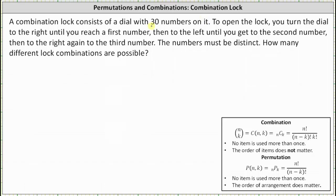In this case, because there are 30 numbers and it takes three numbers to unlock the lock, the number of different lock combinations or lock permutations is 30 permute 3.